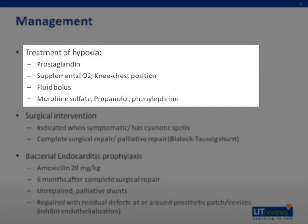If more aggressive treatment is needed, a fluid bolus can be given to increase right ventricular filling, together with morphine that acts to both sedate the child and relax the pulmonary infundibulum. Beta blockers decrease right ventricular contractility and heart rate, and possibly relax the right ventricular outflow tract, thus promoting pulmonary blood flow. If these are still insufficient, phenylephrine can help increase systemic resistance.